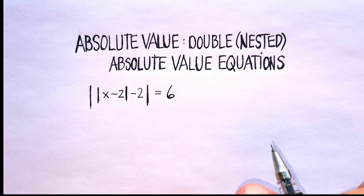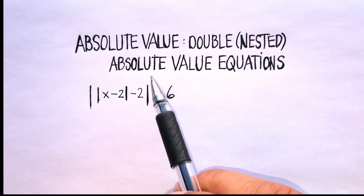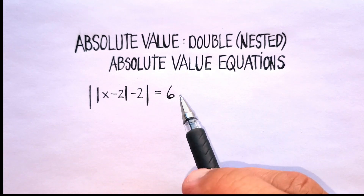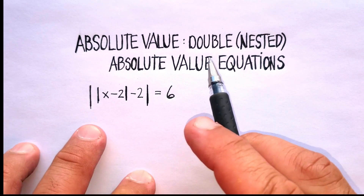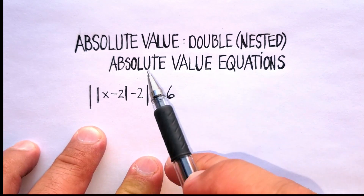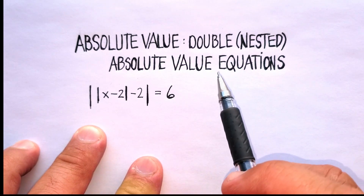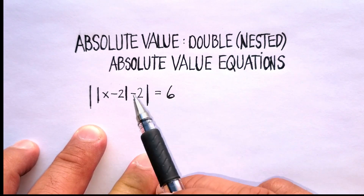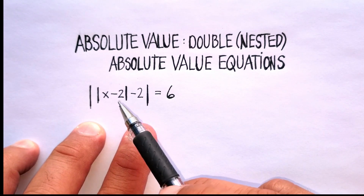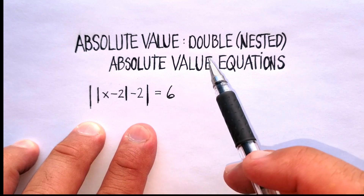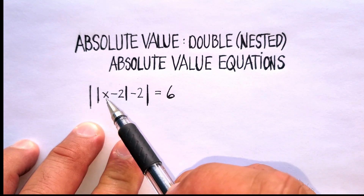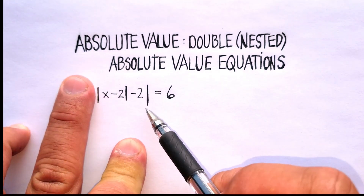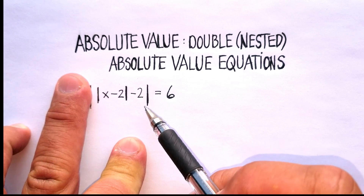In this video, we're going to go over an absolute value equation, but this one's going to be particular. It's going to be a double-nested absolute value equation. Double clearly means that there's two absolute values, but nested means that one of the absolute values is inside the other absolute value.